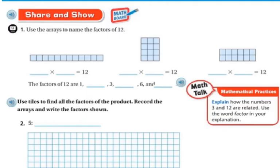The next problem wants us to use the arrays to name the factors of 12. They've already drawn out the arrays for us. So this is 1 by 12 — one row of 12 tiles. 1 times 12 is 12. If you count them, there are 12 of them.